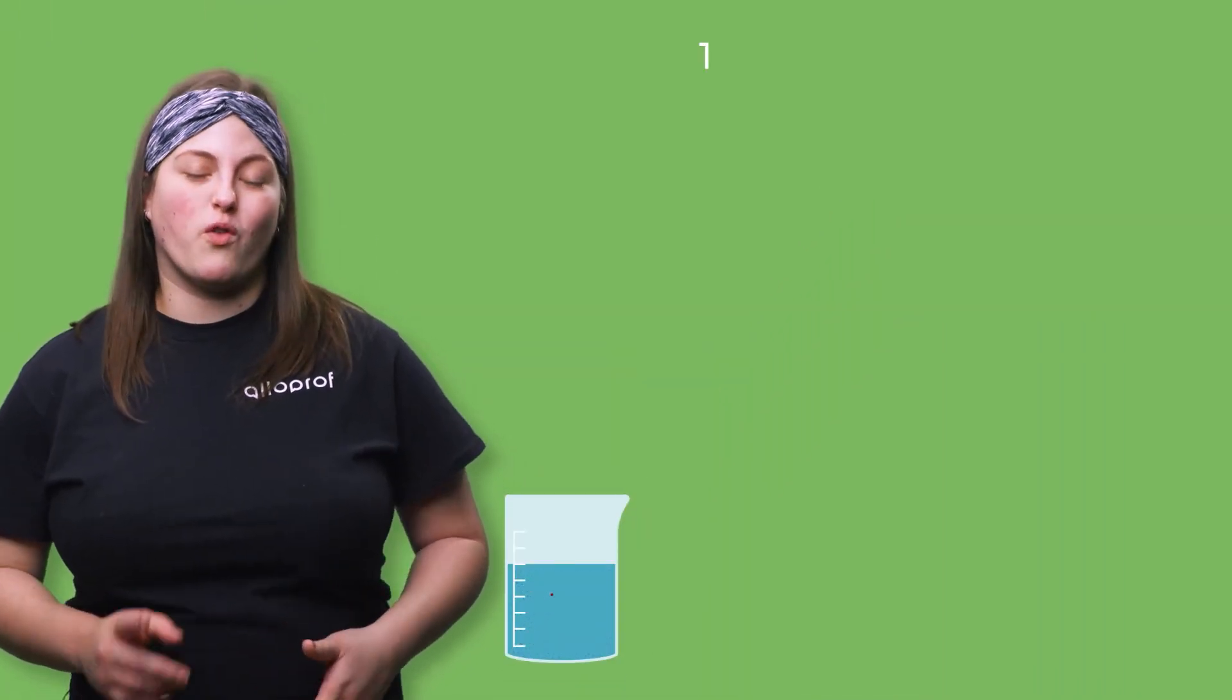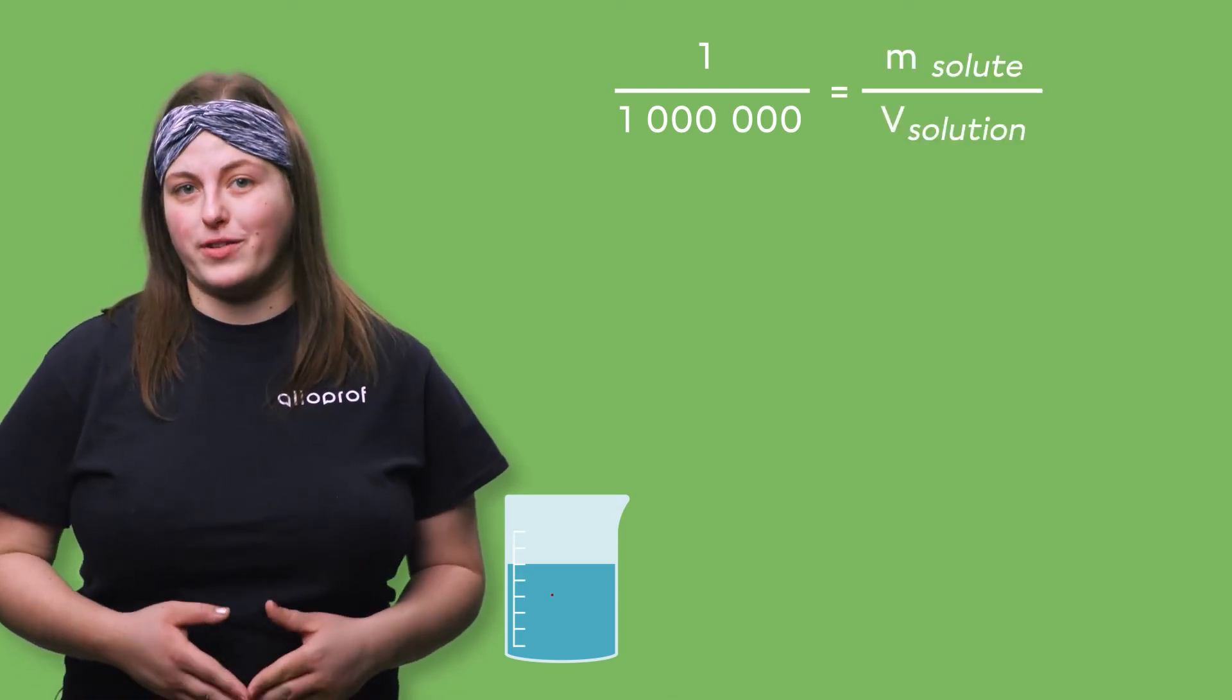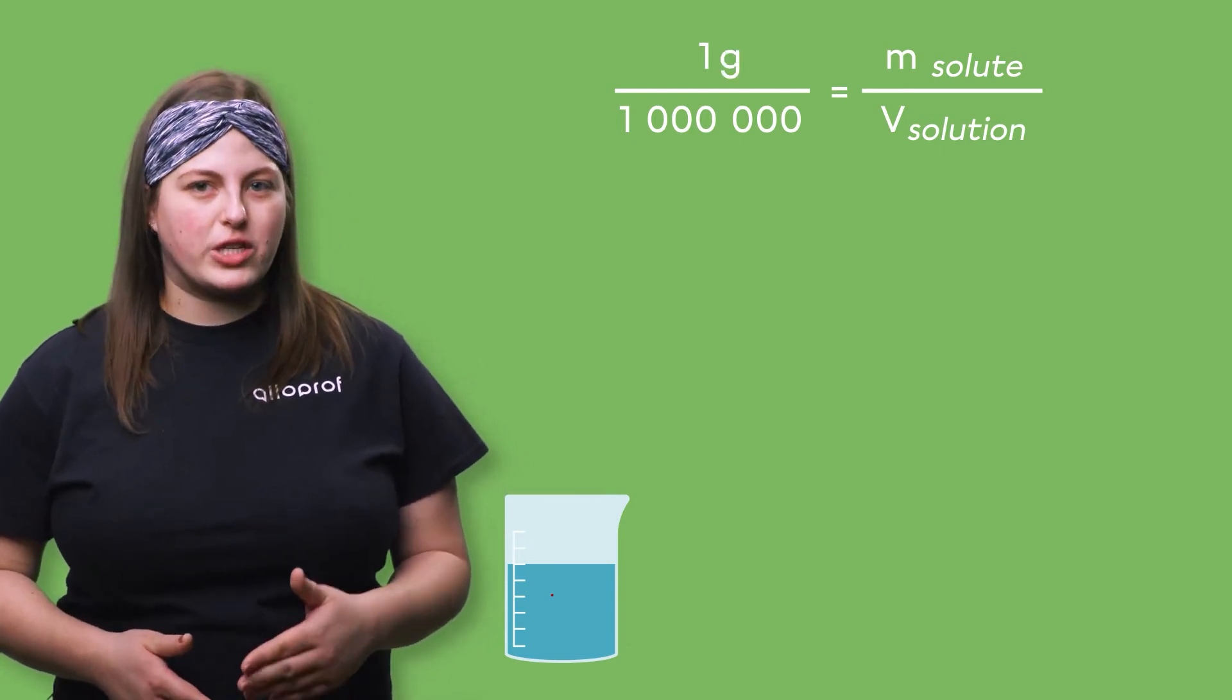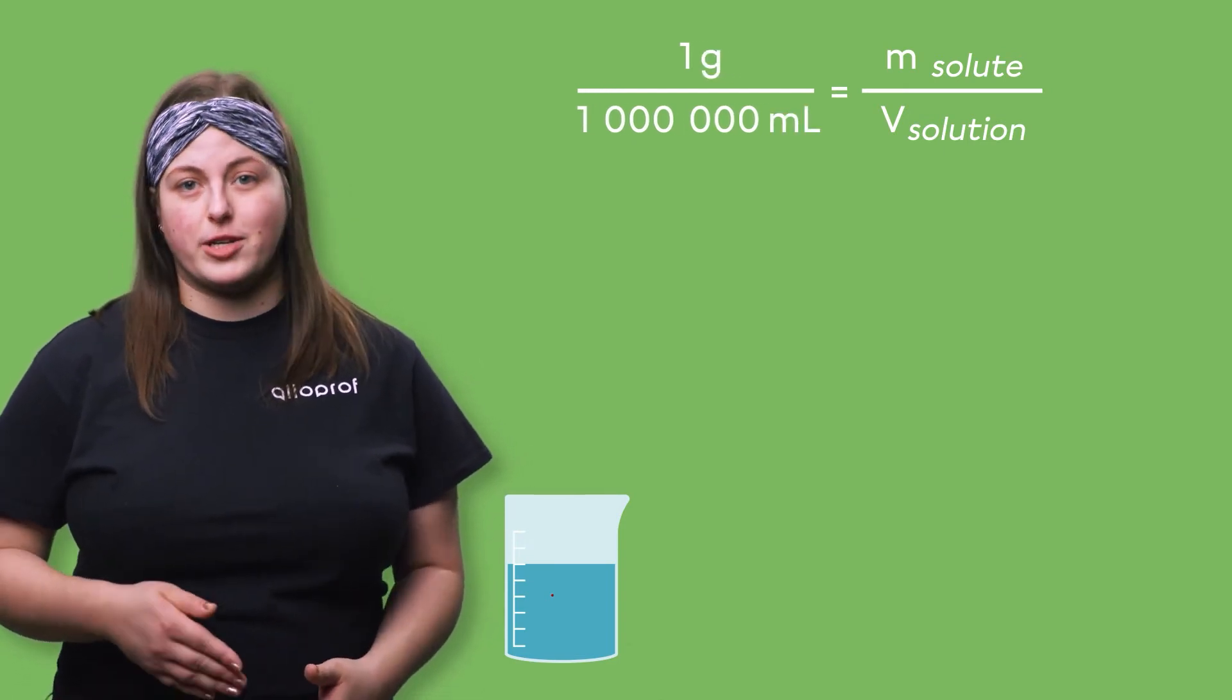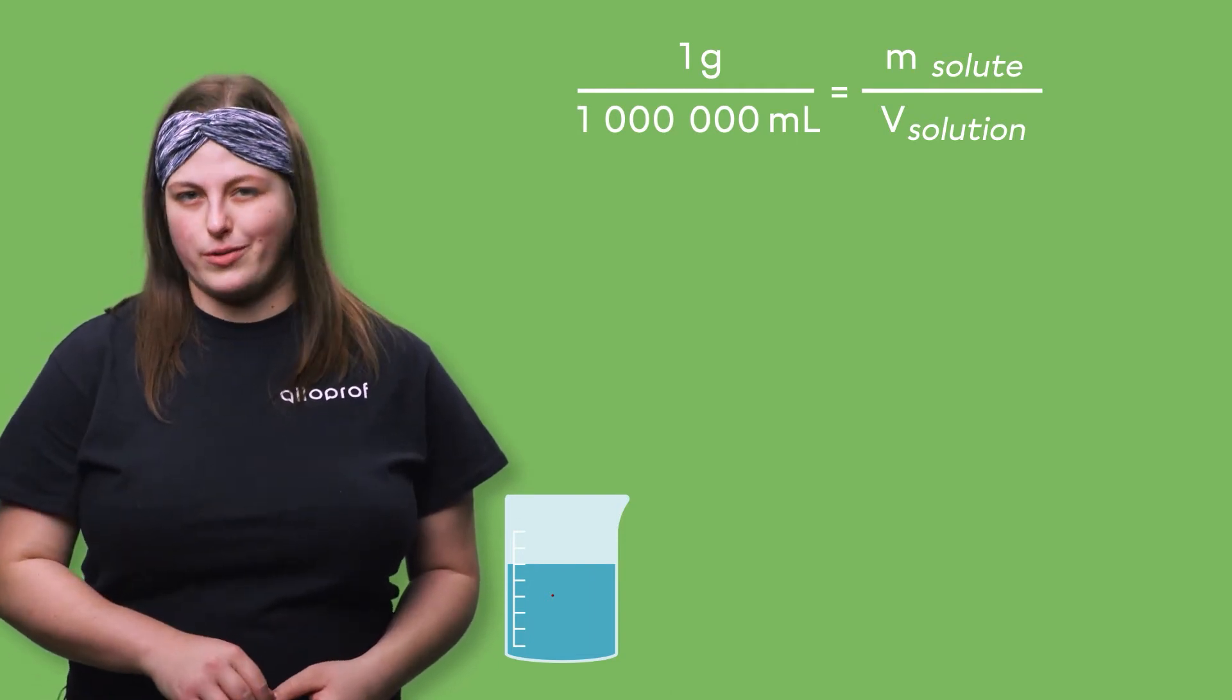Remember that PPM refers to the ratio of 1 to 1 million between the mass of solute and the mass or volume of a solution. Remember also that mass is measured in grams and volume is measured in milliliters. Let's start by making conversions in order to use this formula.